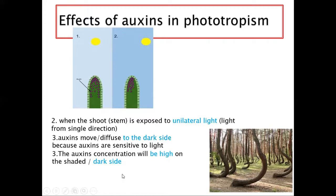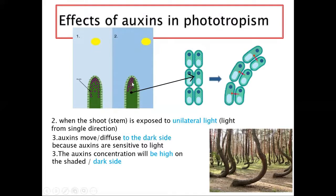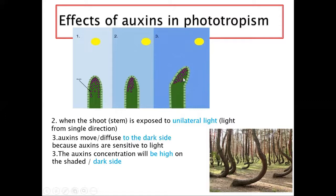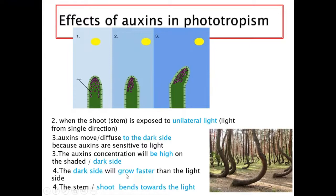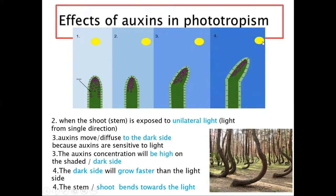Remember, auxins are growth promoters — they allow growth to happen at a faster rate. So the dark side will start growing faster than the light side because it has more auxins. This side is going to be elongated more, while the other side grows less, and then the shoot starts bending. The dark side grows faster than the light side.